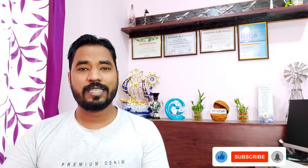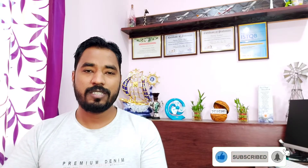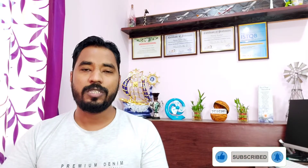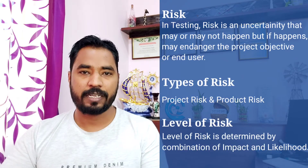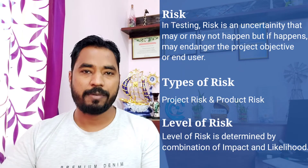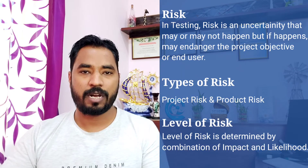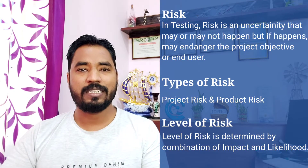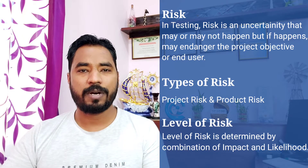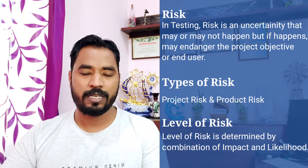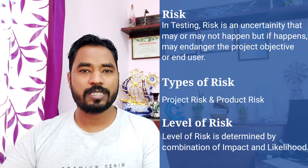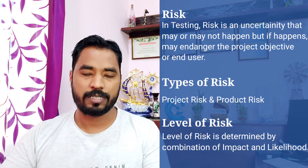Risk is any such uncertainty which may or may not happen. It's like any kind of adverse effect which can happen as part of your process. Generally, when you talk about risk, it is of two types: project risk and product risk.